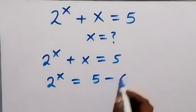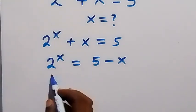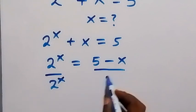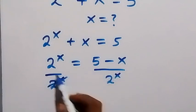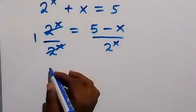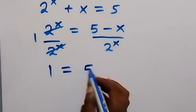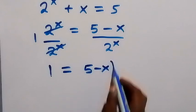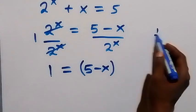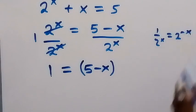In the next step, let's divide both sides by 2 raised to power x, so that this cancels out and we have 1 left here. Then we have 1 equals to 5 minus x over 2 raised to power x, which we can write as 1 over 2 raised to power x, which is the same as 2 raised to power minus x.